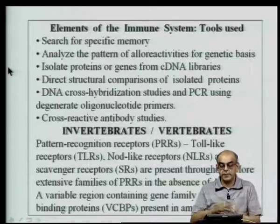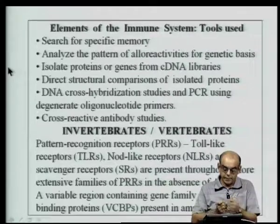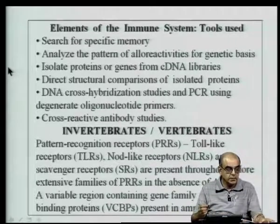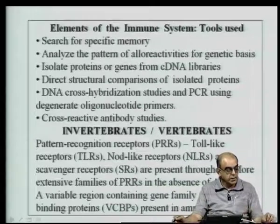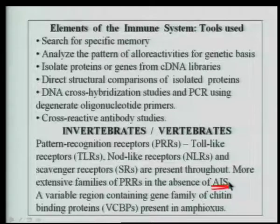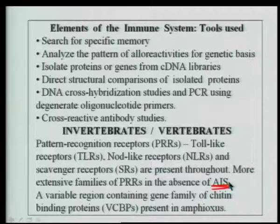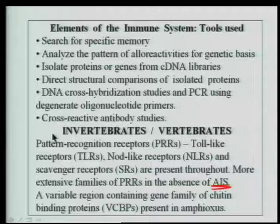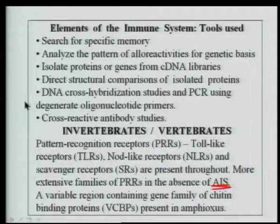Covering both invertebrates and vertebrates, one sees that early on in evolution the presence of an adaptive immune system, or AIS, is not very efficient in early organisms. This has been replaced by a more extensive innate immune system involving what are called pathogen recognition receptors. These pattern recognition receptors actually recognize a pattern in incoming pathogenic molecules or pathogens.